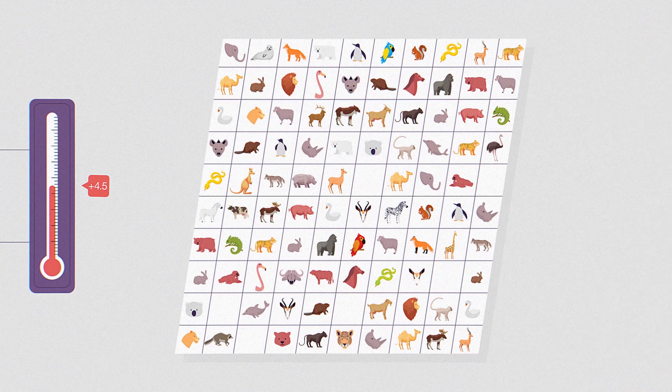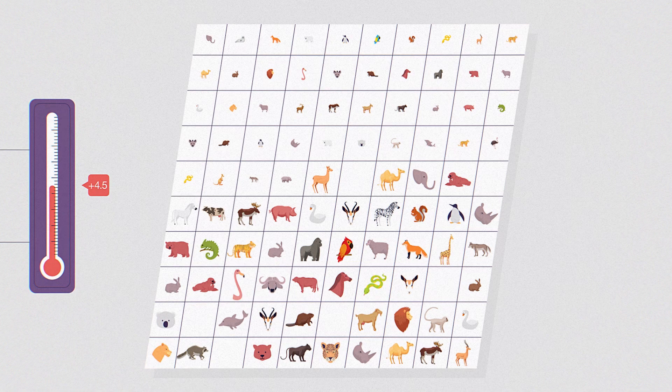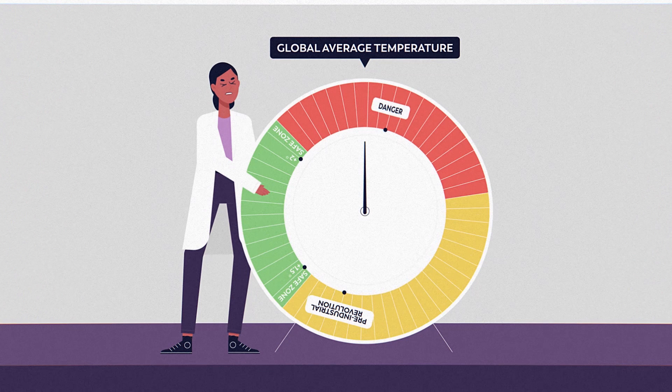At plus 4.5 degrees, 44 percent of all animals with backbones would suffer devastating population losses, as more than half of their home range is lost. Some of these species even die out completely.